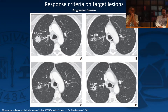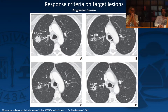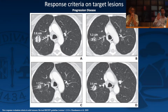For progressive disease: a lung cancer measured 2.8 cm at baseline. After the first follow-up it was 1.3 cm — partial response. At the second follow-up it increased to 1.7 cm — a 20% increase but only a 4 mm absolute increase, which does not meet the 5 mm threshold for progressive disease. At the third follow-up it reached 2.0 cm — this now qualifies as progressive disease.